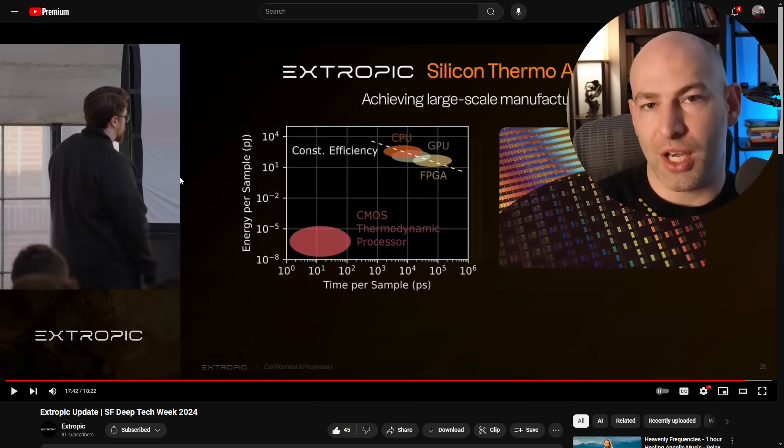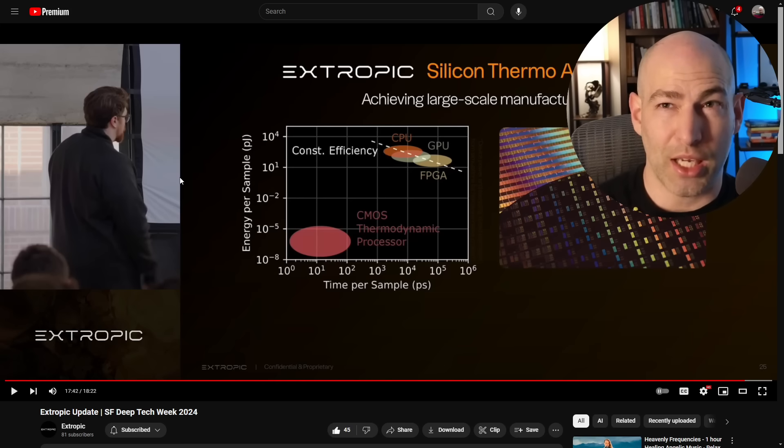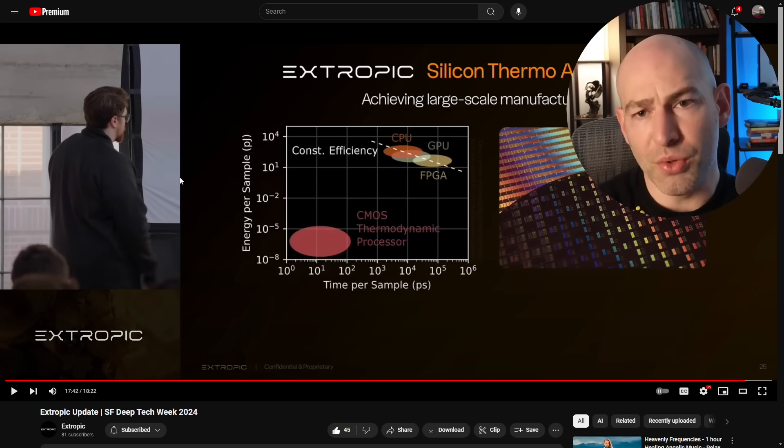What thermodynamic computing does is it actually structures matter in such a way that it intrinsically does computing for you. Now, there were some papers at the rise of transformer technology, particularly back in 2018, 2019, 2020, that came out where they used the natural harmonic resonance of materials to create very simple neural networks. So these were neural networks that were hardware-based using the way that sound and light propagated through materials. And these can basically operate off of ambient energy.